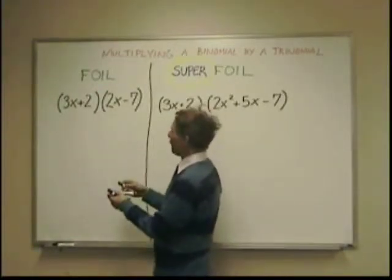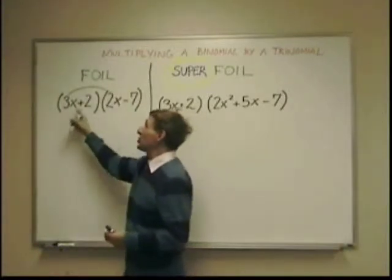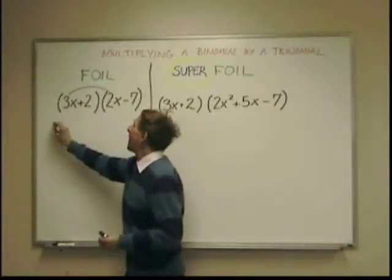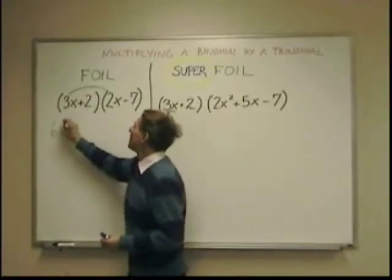Foil stands for first. So I'm going to multiply the first in each set. And that will be 3x times 2x is 6x squared.